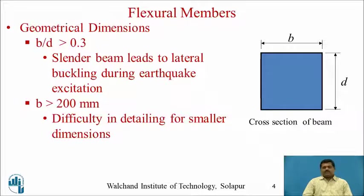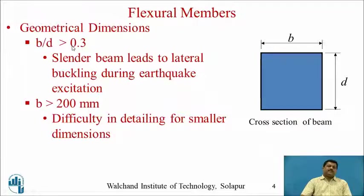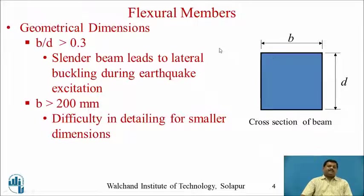The flexural member — the beam — has breadth and depth as seen in its cross section. The first geometric provision is that the ratio b/d (breadth to depth) must always be greater than 0.3. This is important because if the width is too small relative to the depth, the beam becomes very slender, and slender beams are prone to lateral buckling during earthquake excitation.